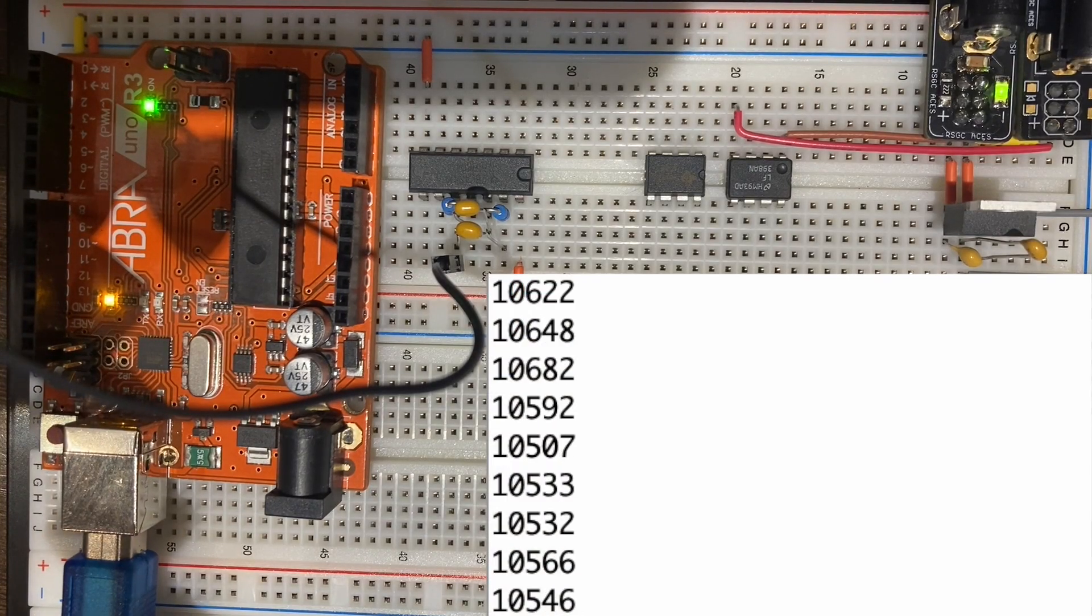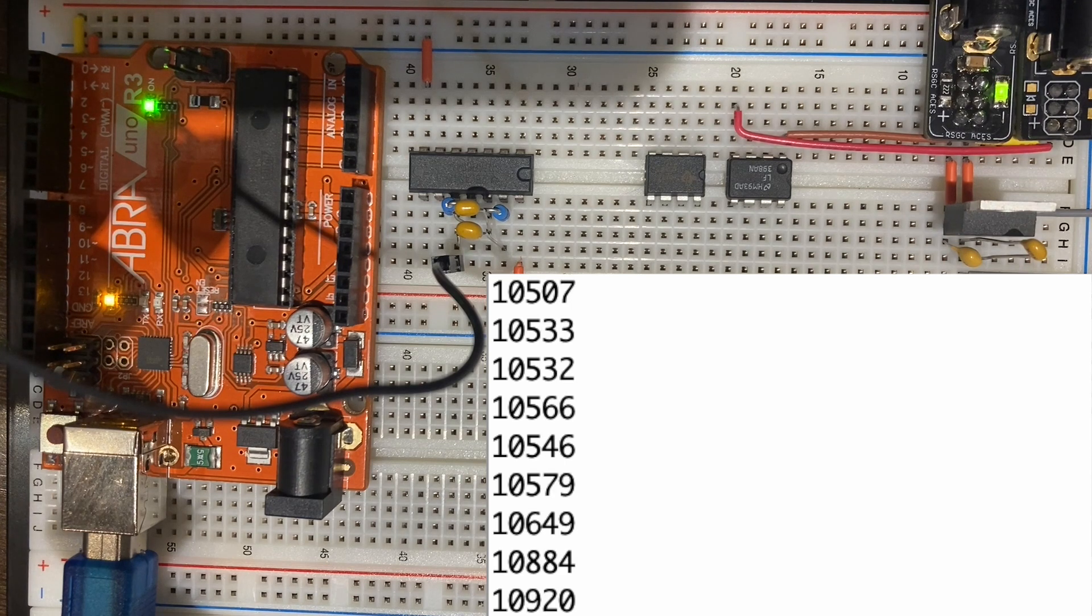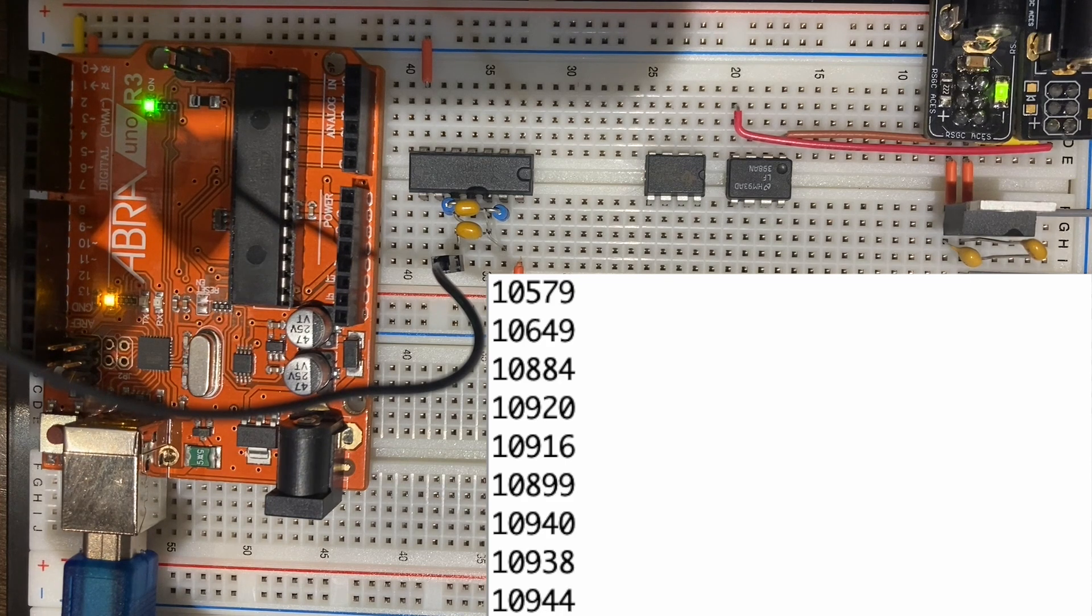Project 3.2.1, SAR ADC oscillator. This is the first project of a series of projects focused on the construction of a successive approximation analog digital converter.